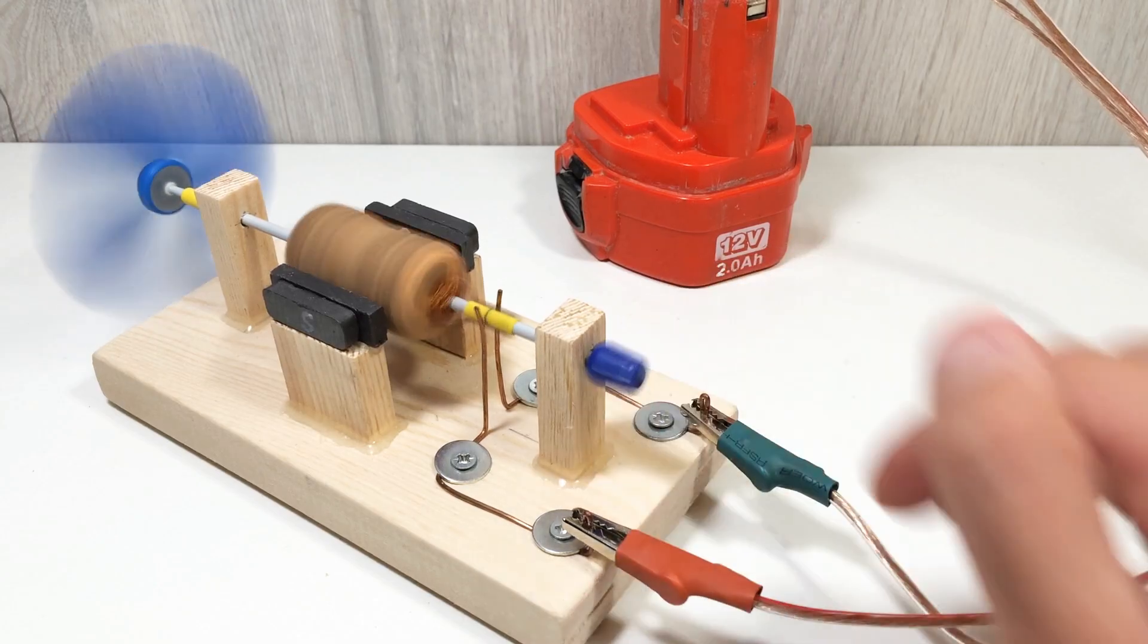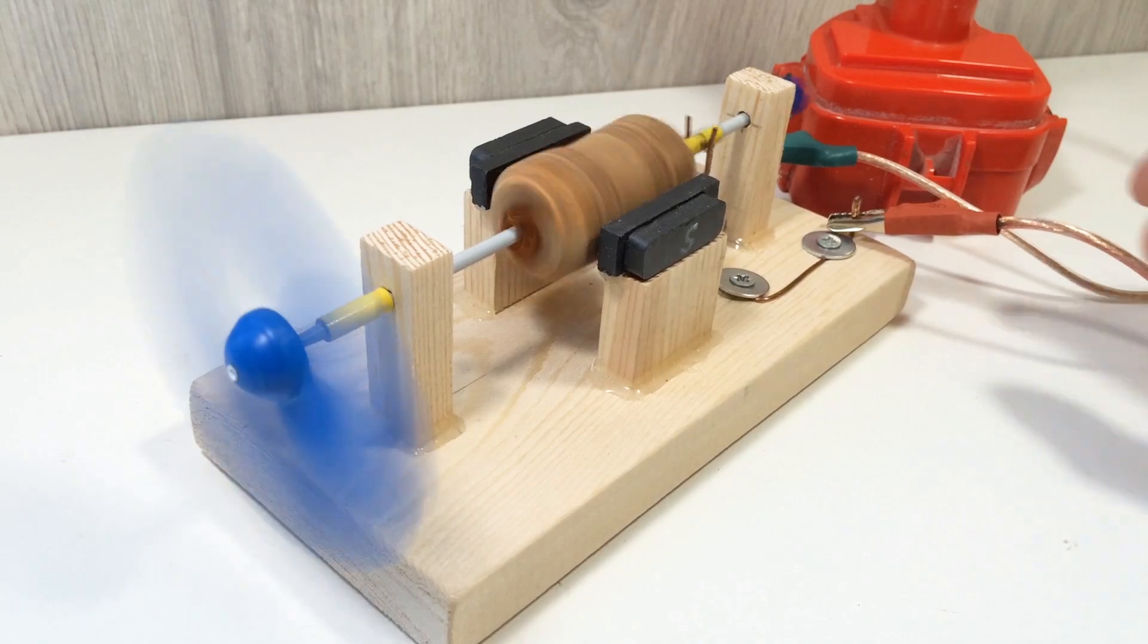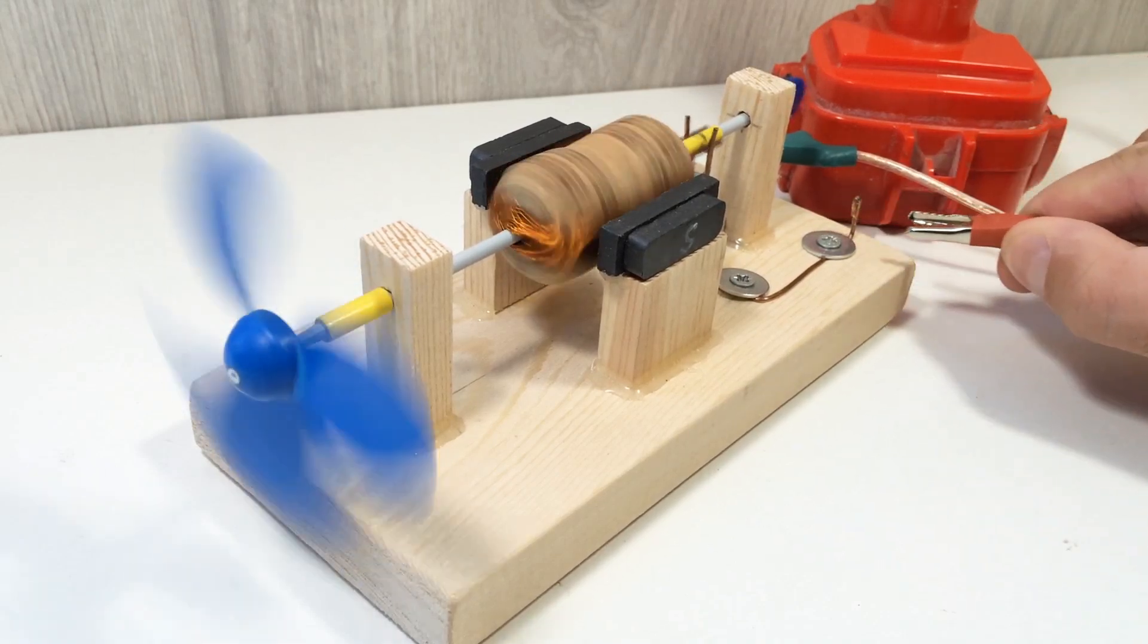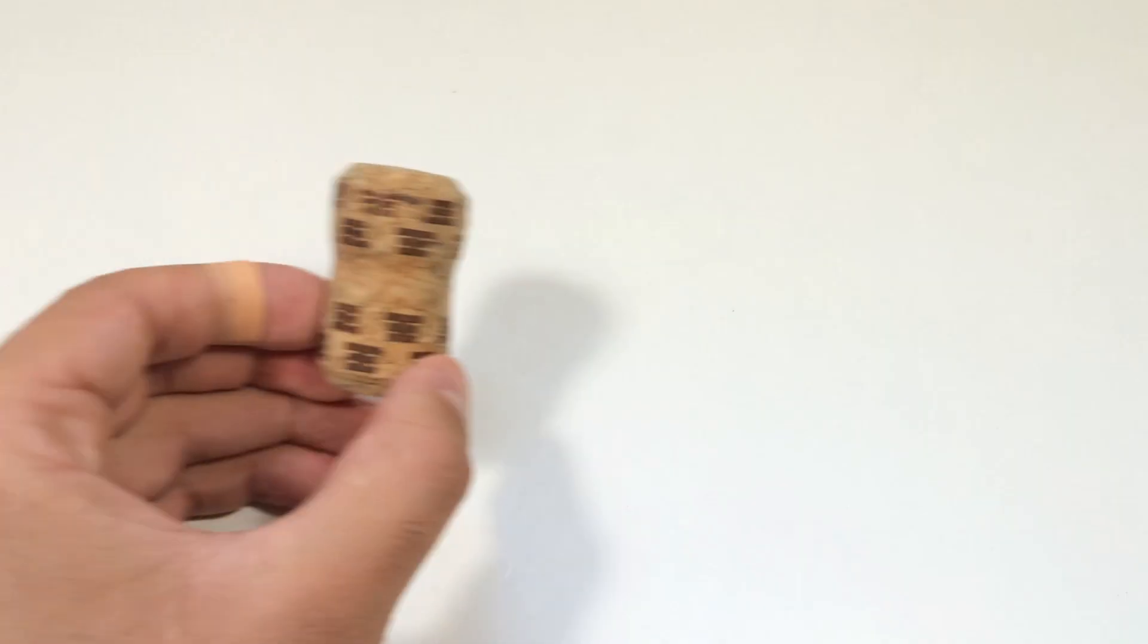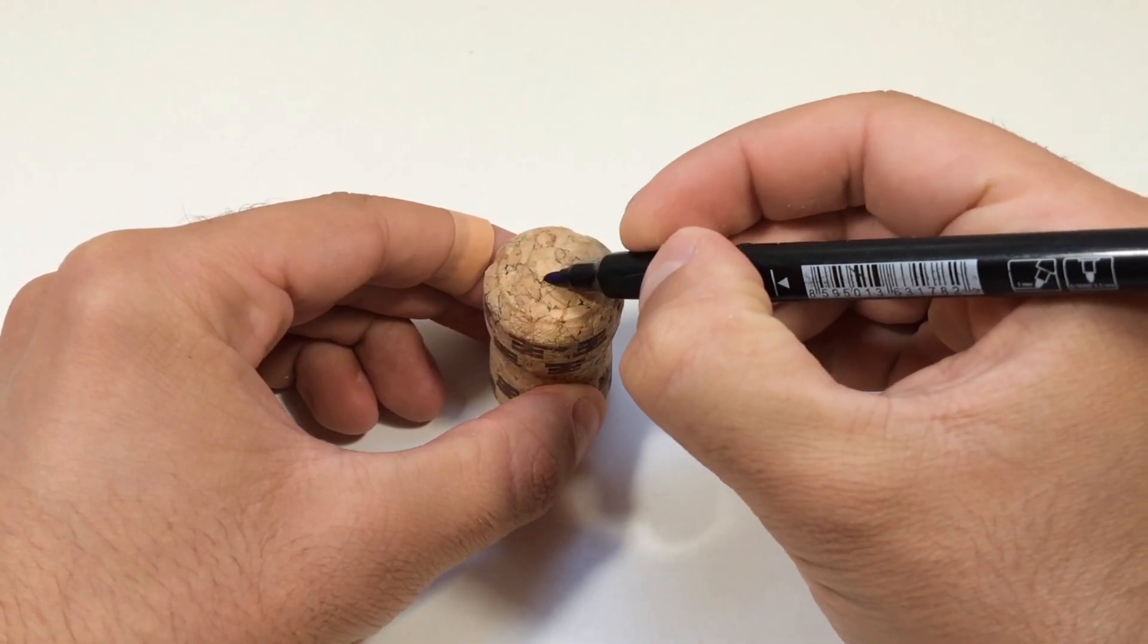Hi guys! Today we will make a real DC motor at home. We need a wine cork. First of all, drill a hole in the center of the plug.